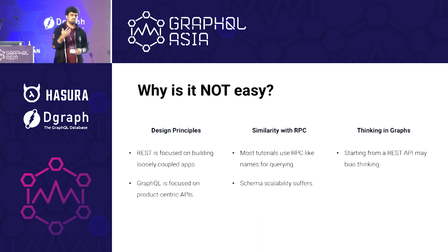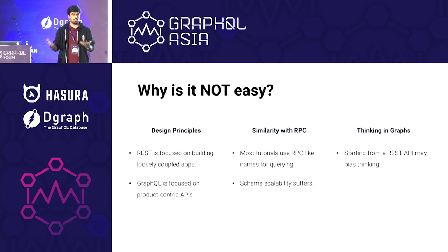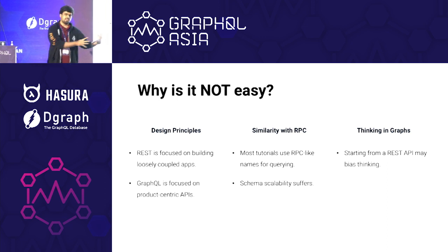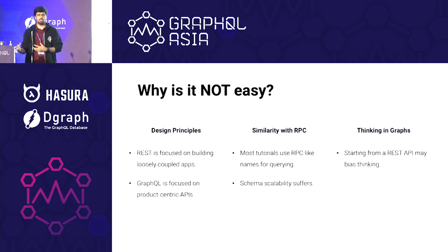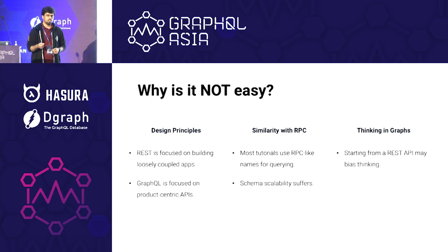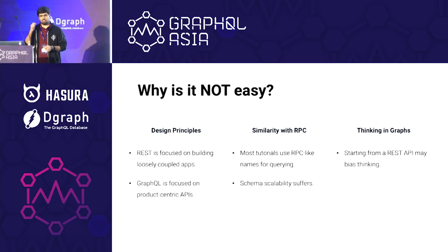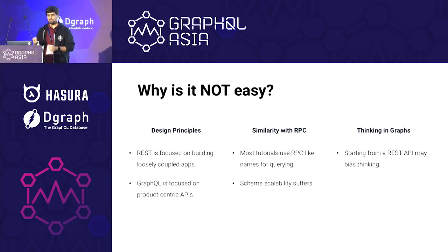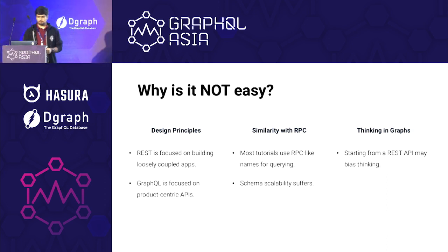Even though as humans we love thinking in graphs and we should think in graphs, when we move from REST to GraphQL our thinking itself is biased, which is what affects our schema design.